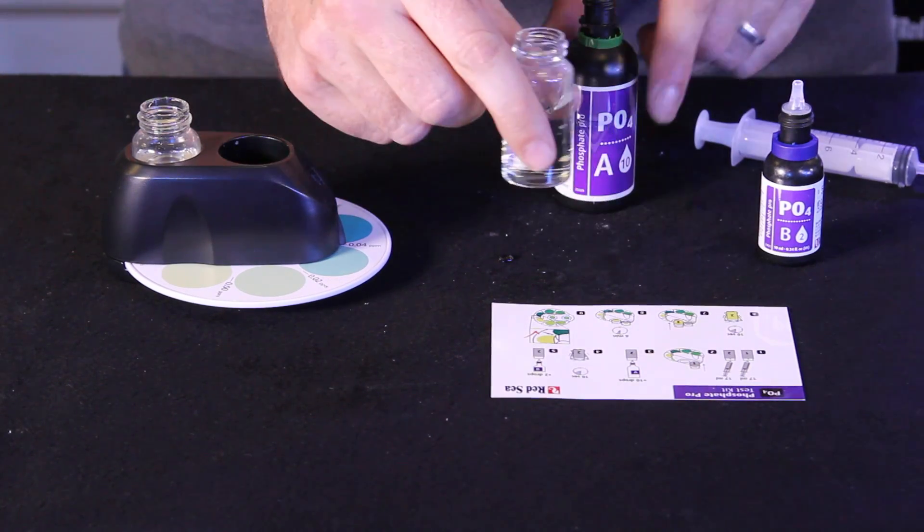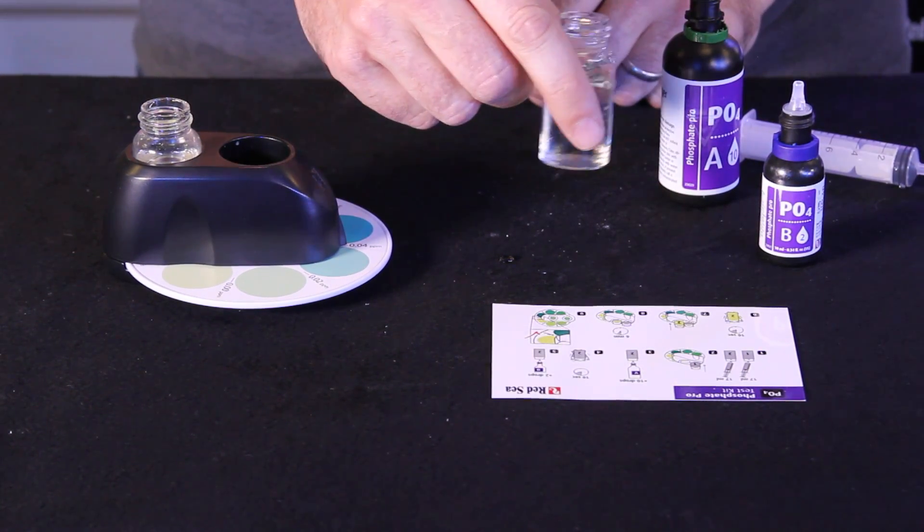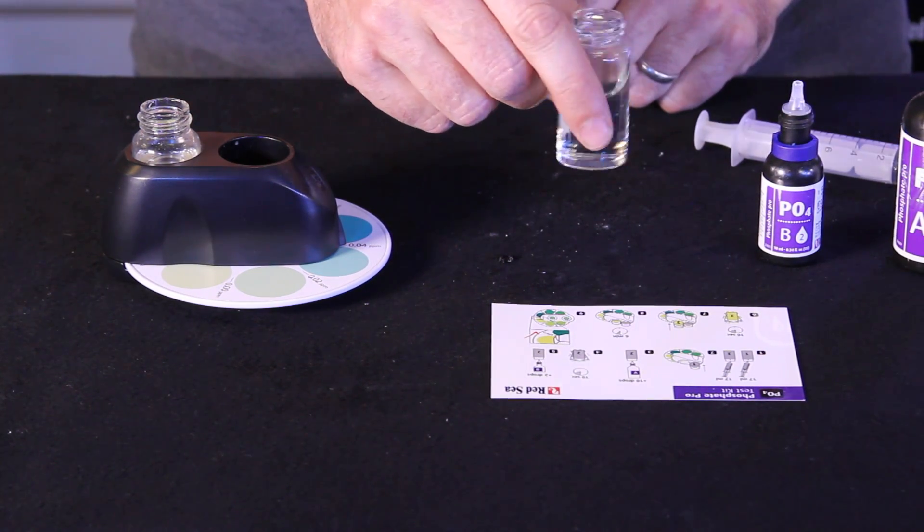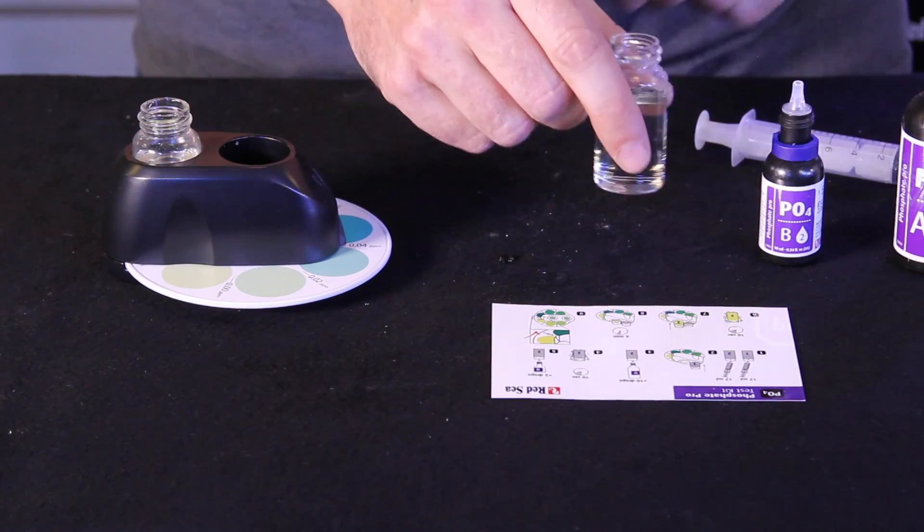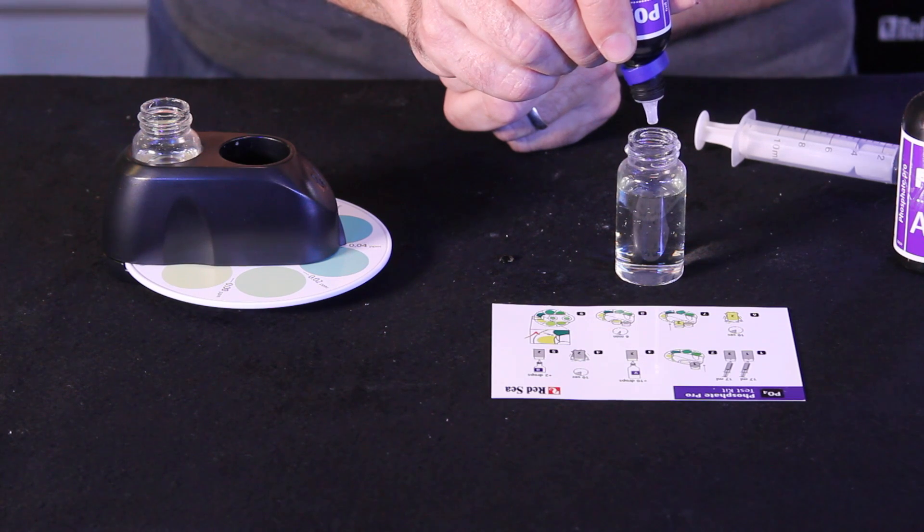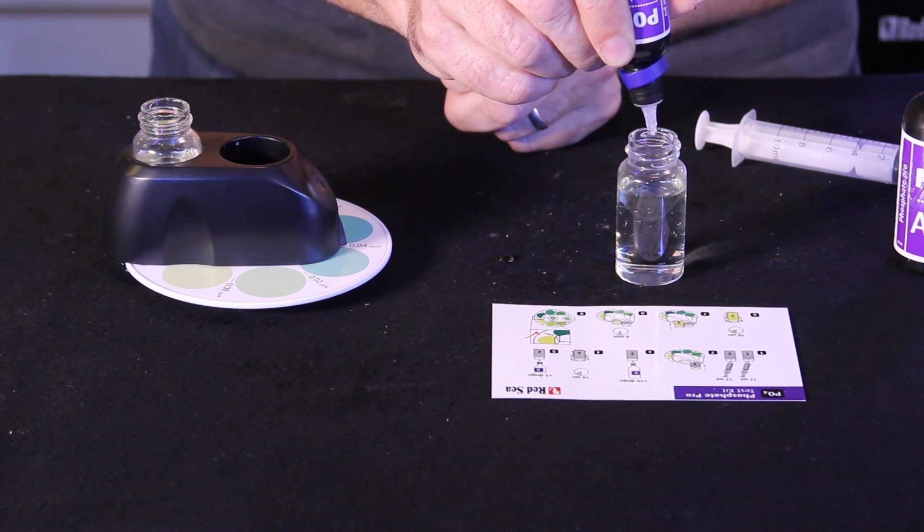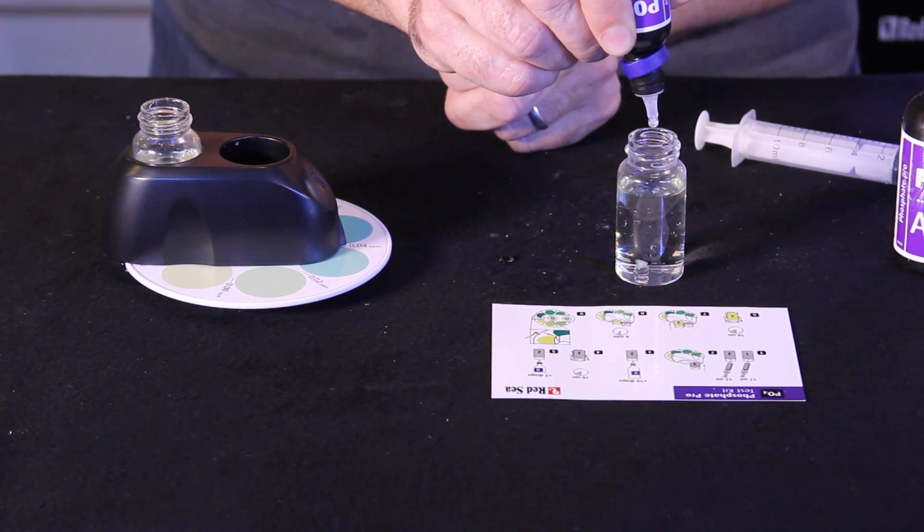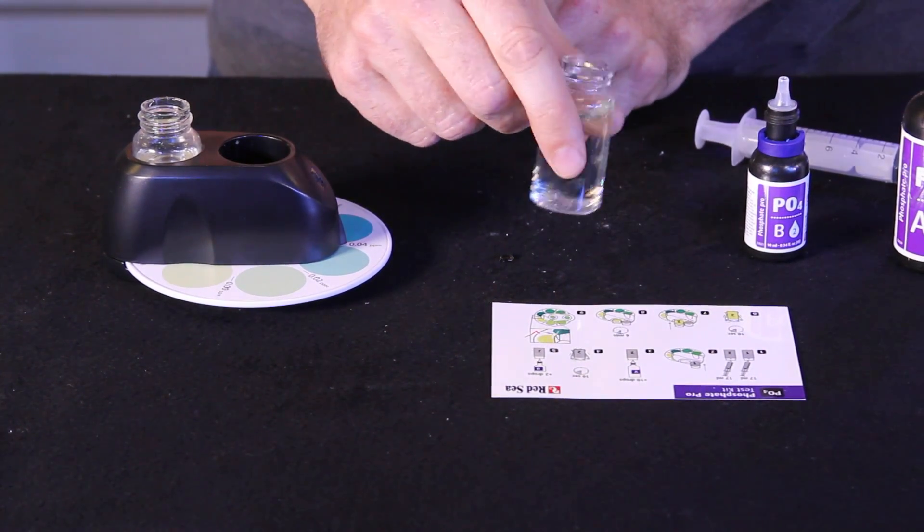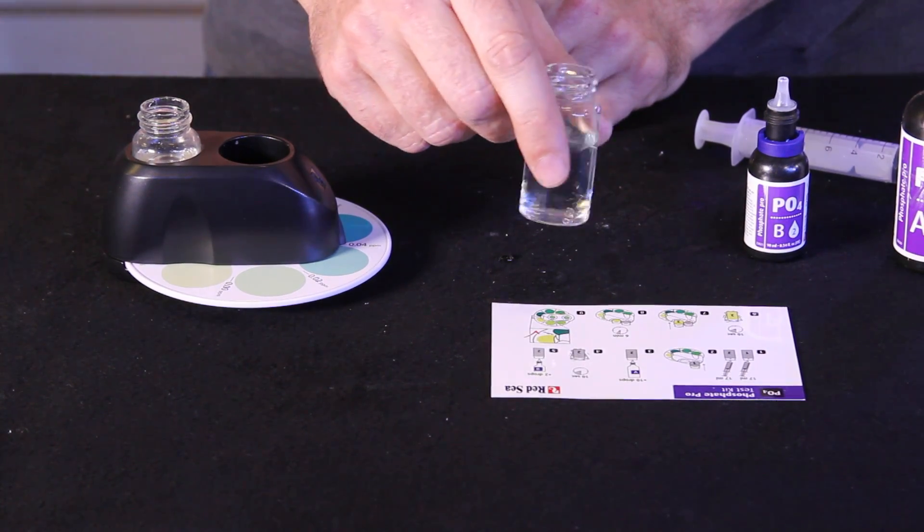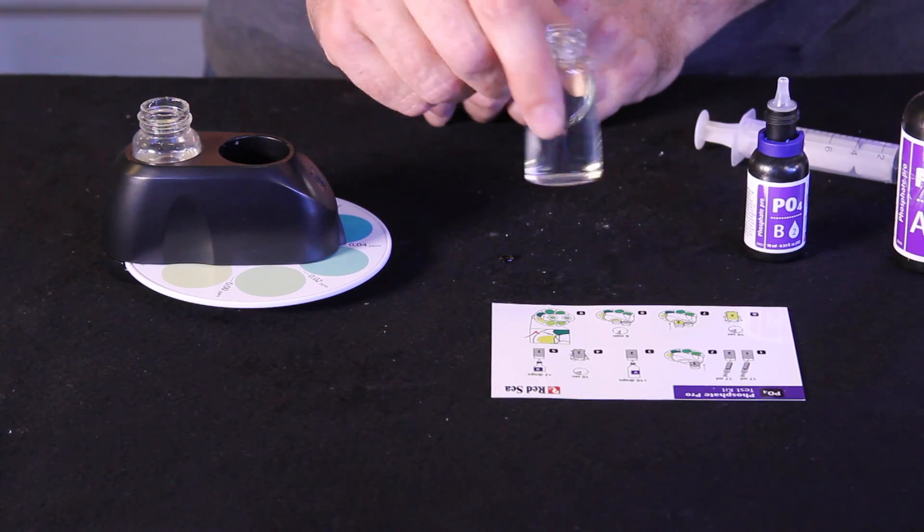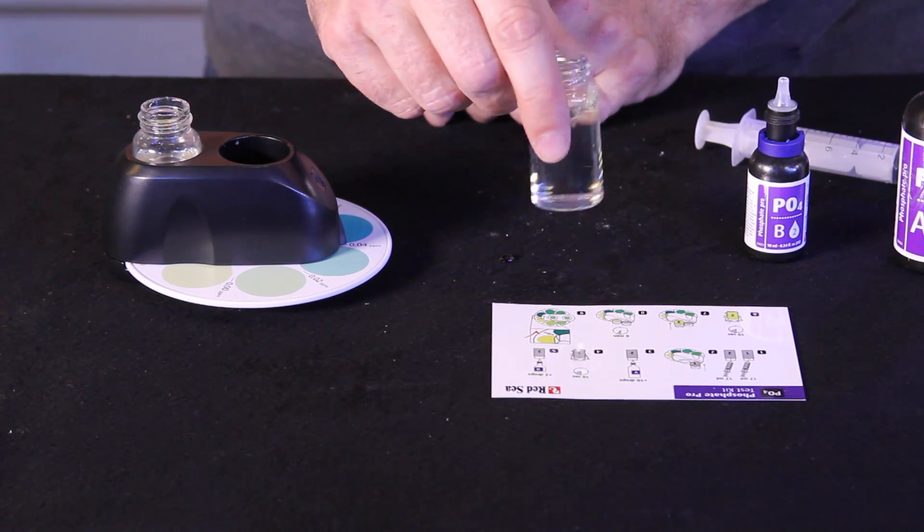And now we need to swirl for 10 seconds and then we're just going to do two drops of reagent B. Very simple test to do. One, two, now we need to swirl again for 10 seconds and we're going to place it in the center of our color wheel and we need to wait six minutes until we can read our test results.